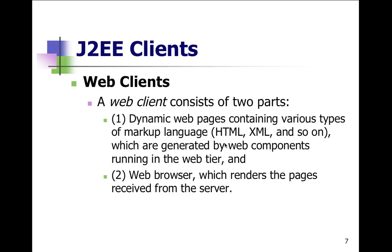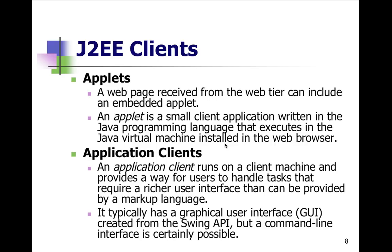The web client consists of two parts: dynamic webpages containing markup, XML, and JSP delivering HTML or XML content, and a web browser that renders pages received from the server. Applets are sort of a thing of the past — nobody uses them anymore, though they're still supported. A webpage from the web tier can include an embedded applet, which is a small program downloaded to the client's computer. Application clients can also be graphical user interfaces, sometimes with Swing, or command line interfaces.